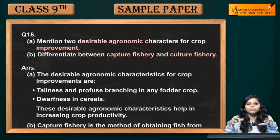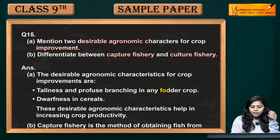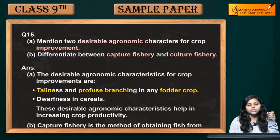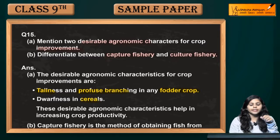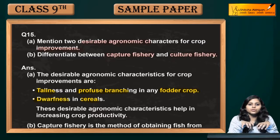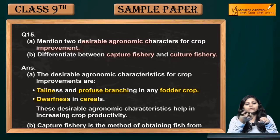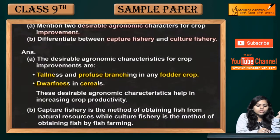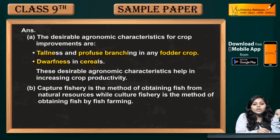Desirable agronomic crop characteristics for crop improvement: agar fodder crop hai to tall honi chahiye aur unki profuse branching honi chahiye. If cereals hain then vo dwarf hone chahiye, chote hone chahiye. Yeh characteristic features crop ki variety ko ya crop productivity ko increase karengi. Yeh kuch desirable characteristics hain jo hamein fodder crops and cereals se chahiye.